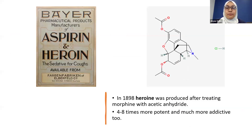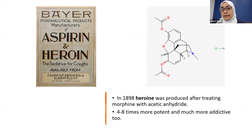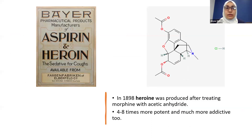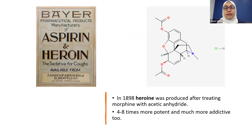In 1898, heroin was produced by treating morphine with acetic anhydride. It is four to eight times more potent and much more addictive. Interestingly, it was produced by Bayer and was sold in pharmacies as a cough sedative medication.